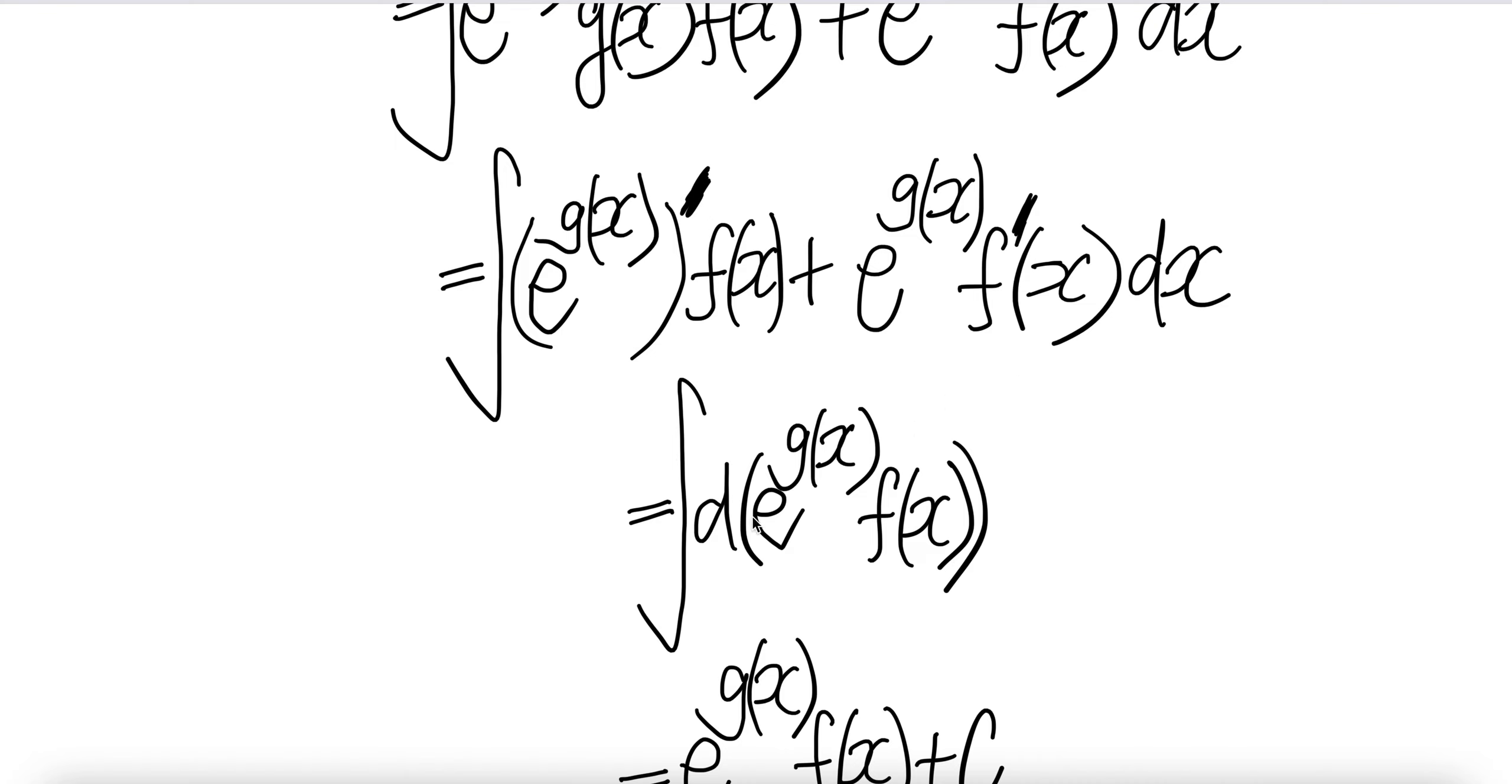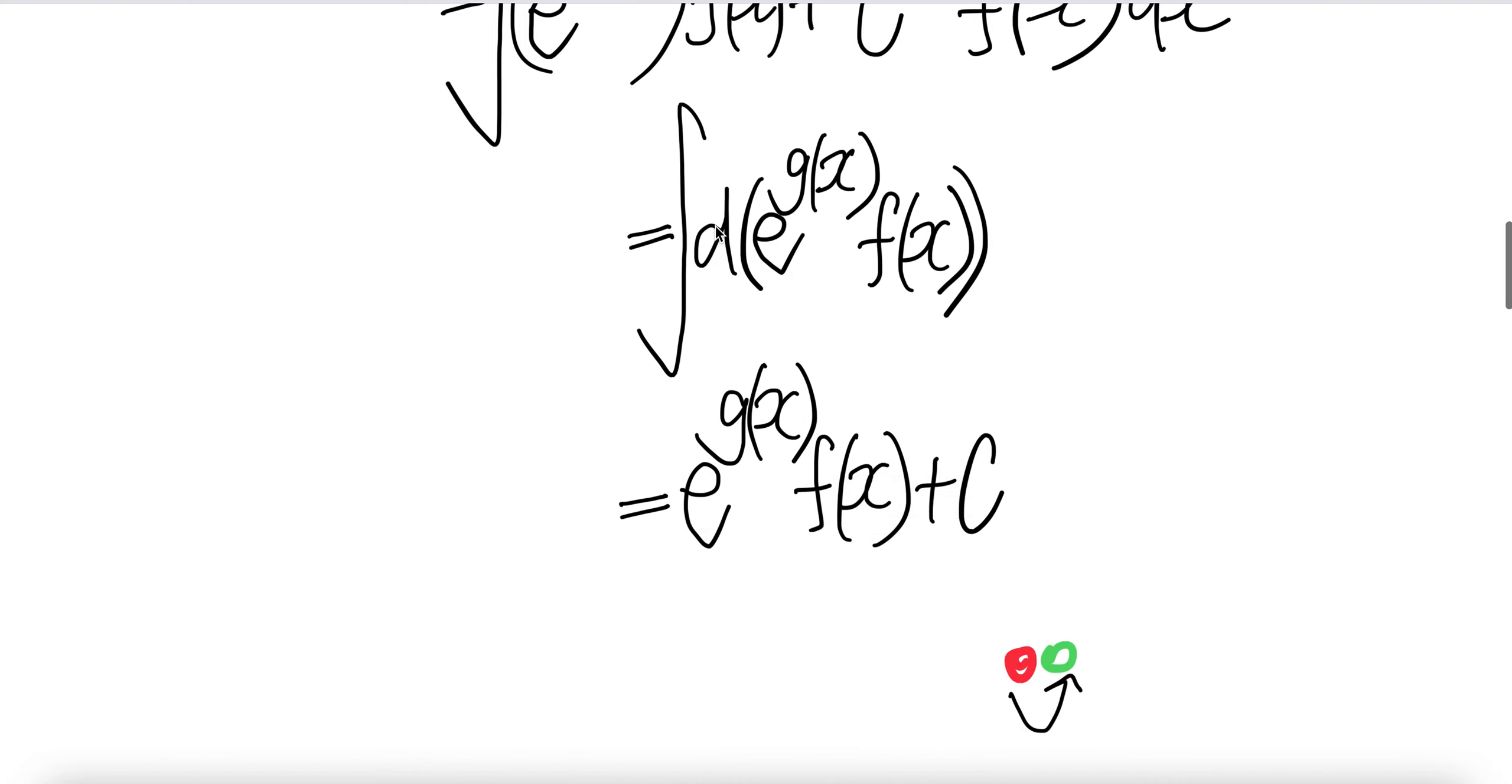So this is the same thing as this. The derivative of a product of two functions is the derivative of the first times the second plus the first times the derivative of the second. Integral and derivative cancel, you get this piece here plus c. Done.